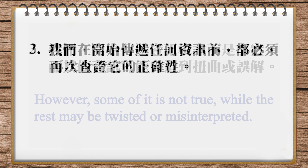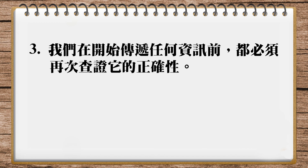OK, and we have one sentence left. 最後一句，比較簡單，我們在開始傳遞任何訊息之前，都必須要再次查證它的正確性。所以，so, we should再次查證，就是double check，那查什麼東西呢？The accuracy of the information，就是這個資訊的正確性，before怎麼樣呢？我們傳遞它出去，傳遞是pass on，那這裡我們可以用it代表這個information，那當用代名詞的時候，就必須要把這個it放到pass on之間，所以before we pass it on to others. 所以我的翻譯再念一次：so, we should double check the accuracy of the information before we pass it on to others.